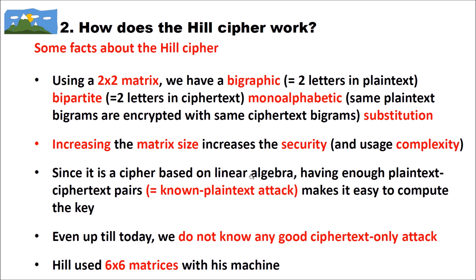Since the cipher is based on linear algebra, having enough plaintext-ciphertext pairs makes it easy to compute the key — this is a known plaintext attack. For modern ciphers, we would say such a cipher is broken. The Hill cipher is a classical cipher and should never be used for any serious purpose. However, up to today, we do not know any good ciphertext-only attack. Attacking a 6x6 Hill cipher with ciphertext only is really hard and nearly impossible, and Professor Hill used 6x6 matrices with his machine.